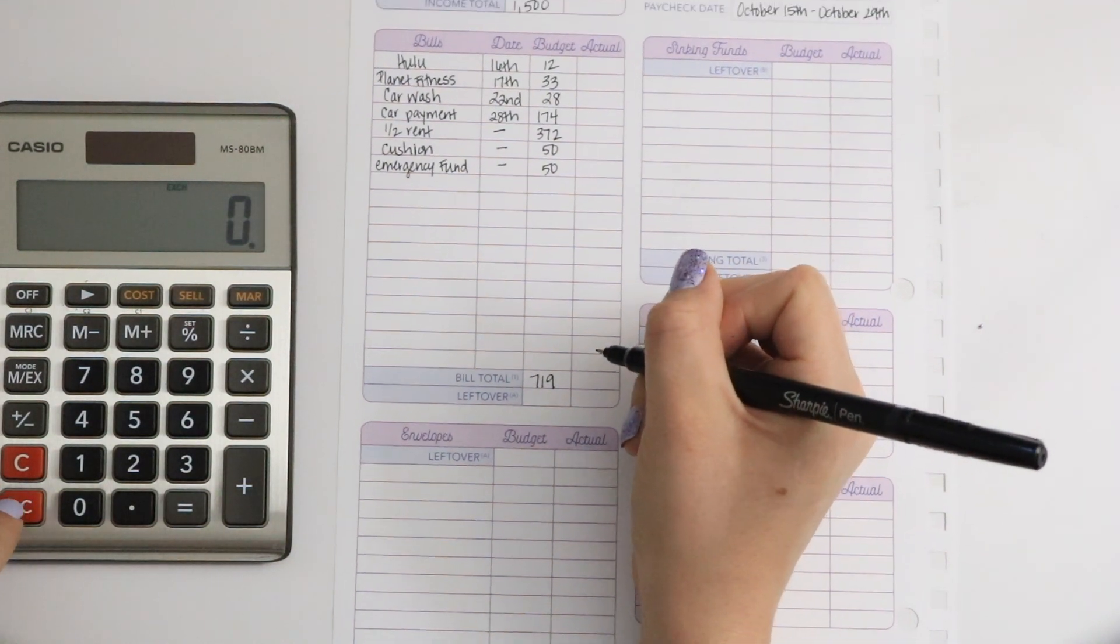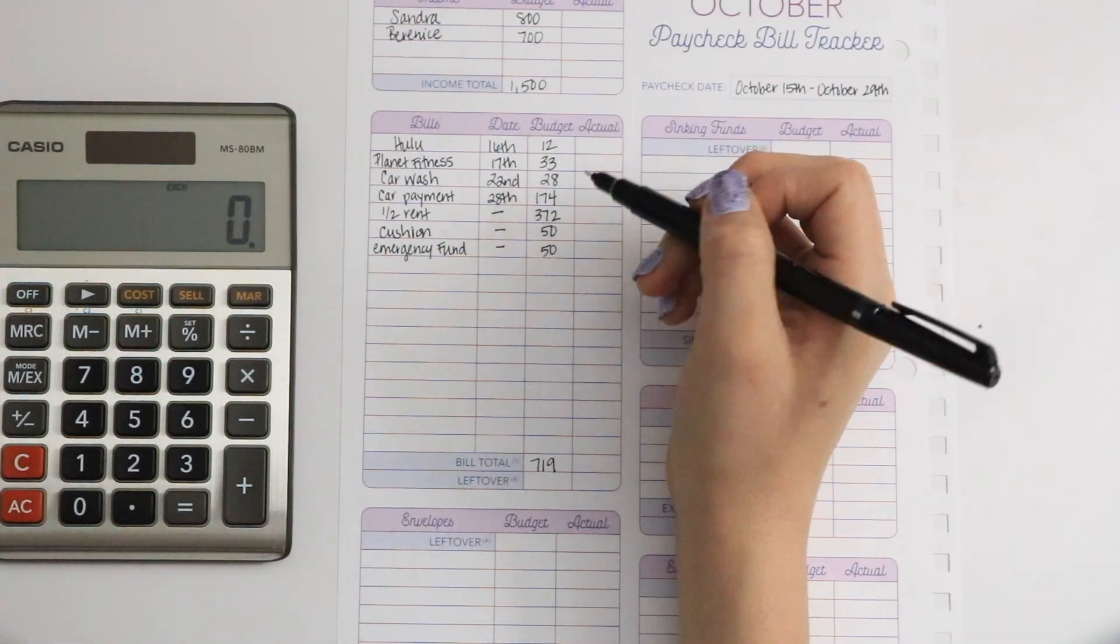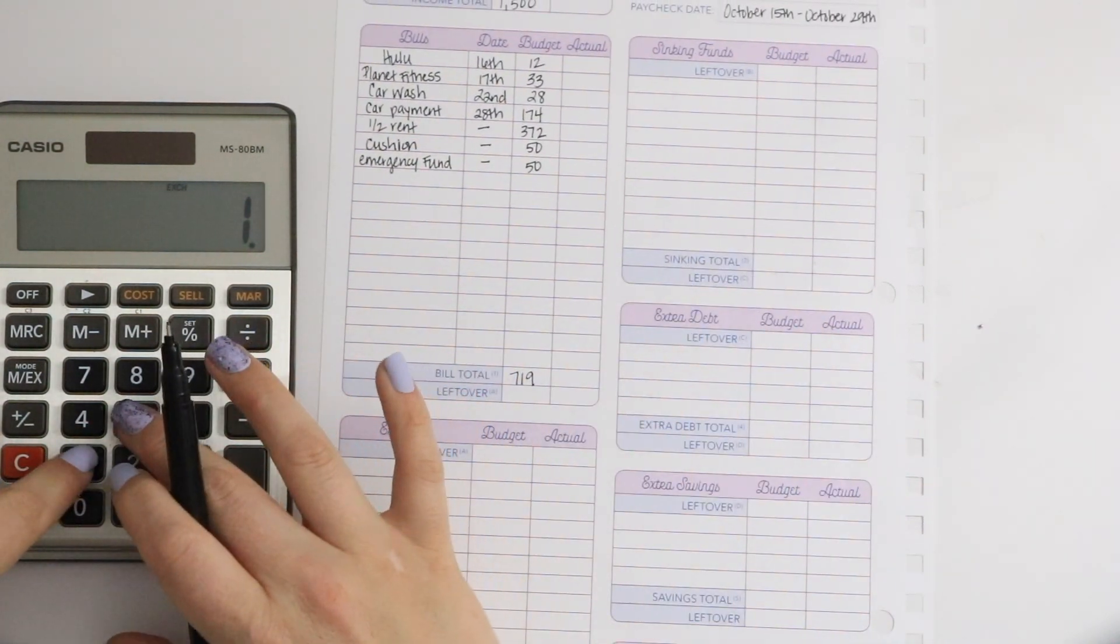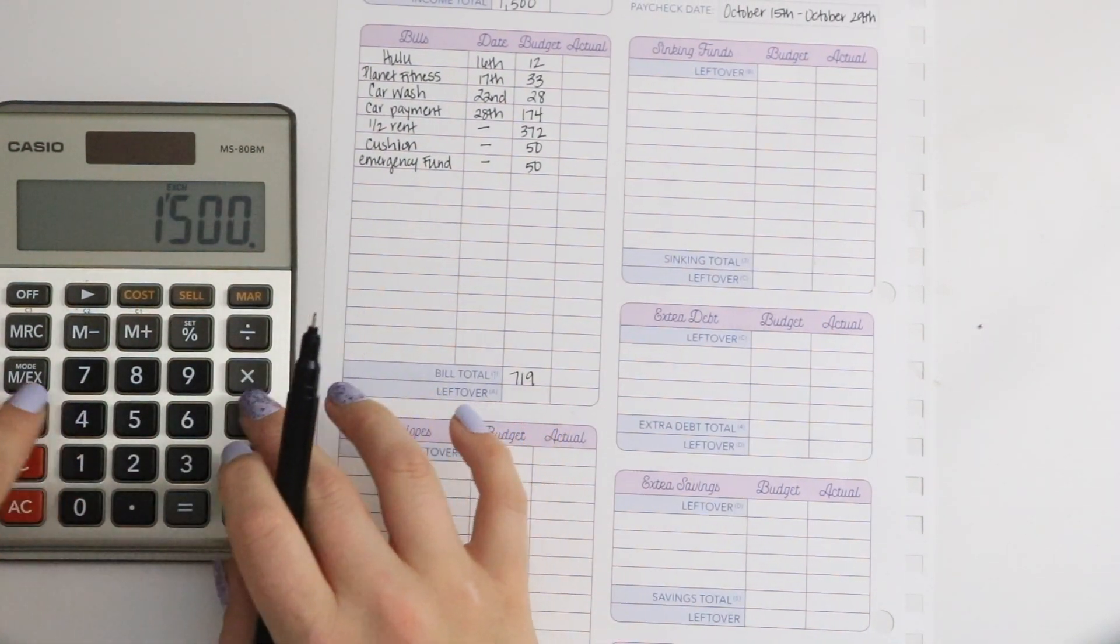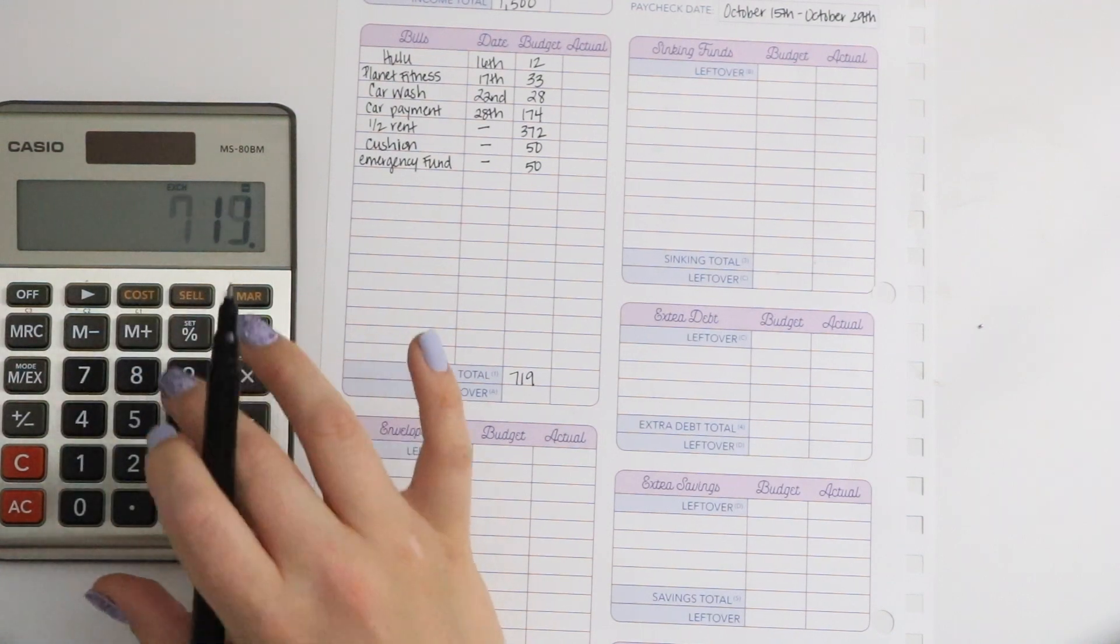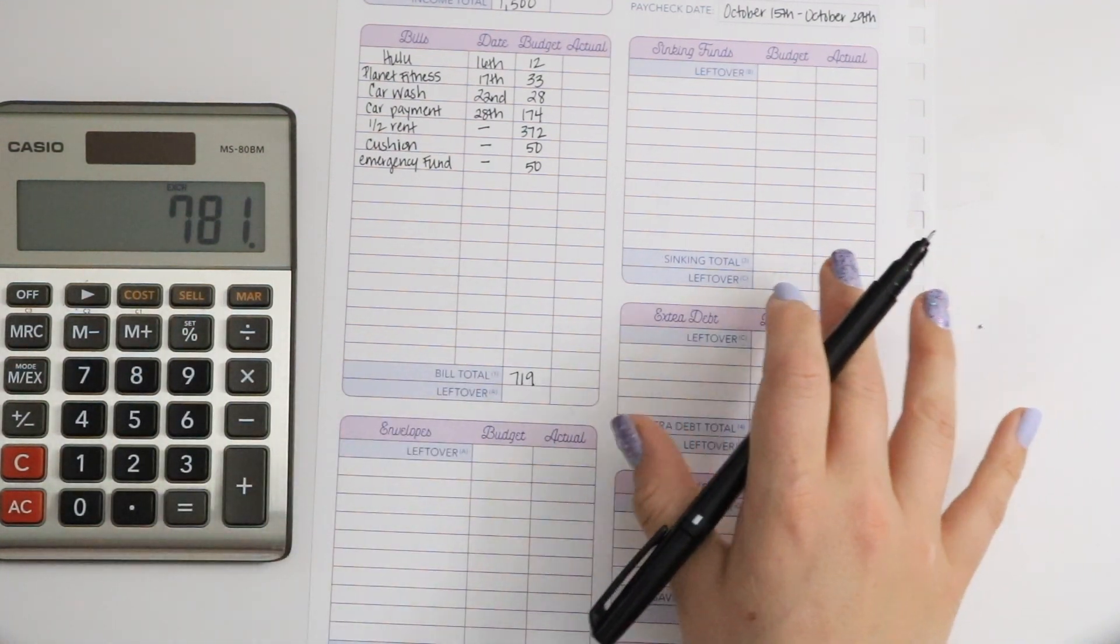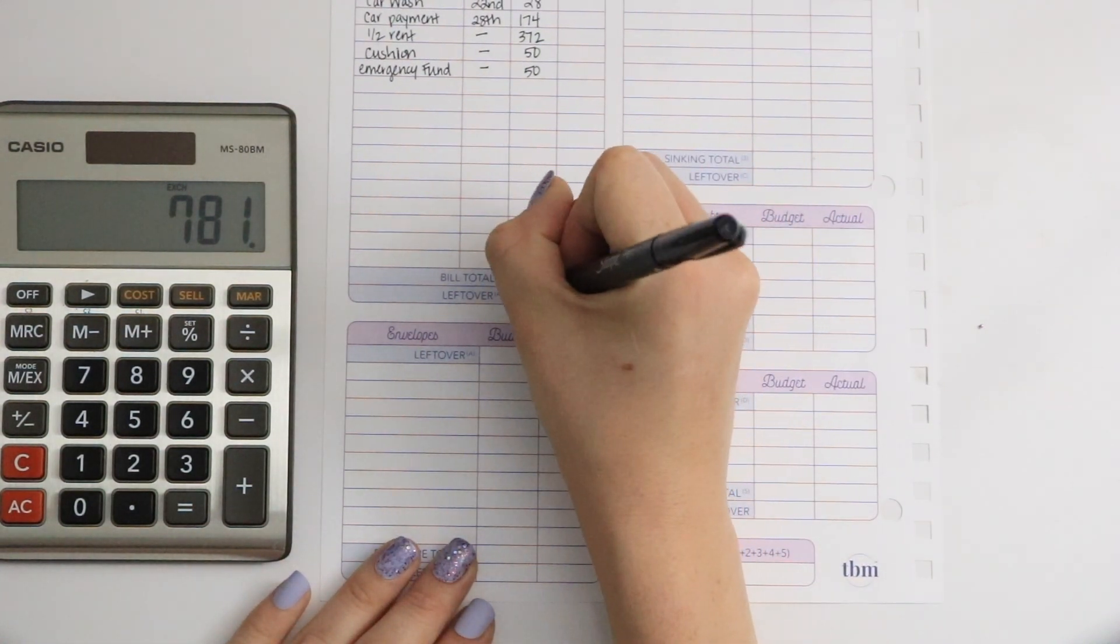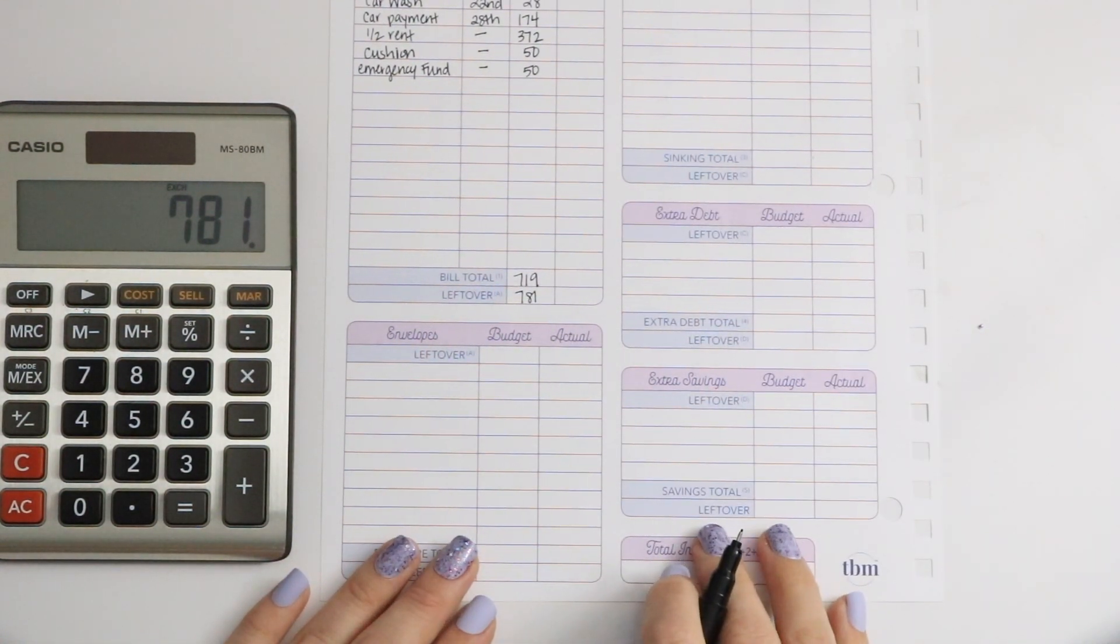So that came up to a bill total of $719. So we're going to subtract the income total minus the bill total. That is $1,500 minus $719, which gives us a leftover of $781.